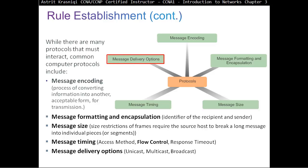Message delivery options: we have unicast, which is one-to-one communication — one source and one destination. We have multicast, which is one source and many destinations. And broadcast, which is one source to all destinations.